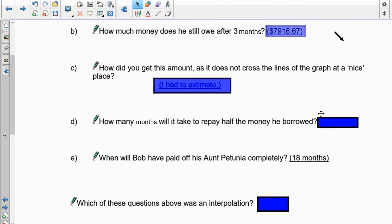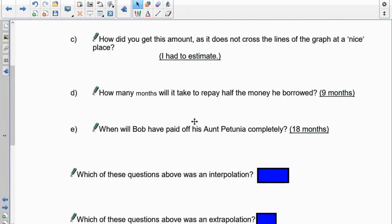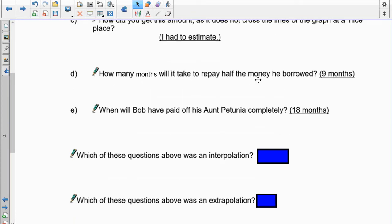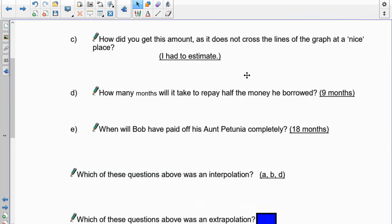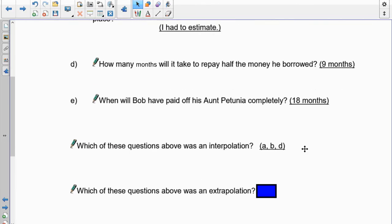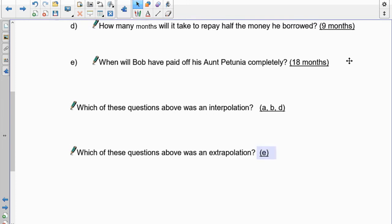Now, taking a look at these questions right here, it says which of these questions is an interpolation? Now, remember interpolation is when you get information off the inside of the graph. Well, he still owes 3 months up here and we are from 0 to 18 months. So, this is an interpolation. And down here, how many months will it take to prepay half? That's still on the graph. That's an interpolation. And when will Bob have paid off his money completely? That's 18 months, but that was beyond where the graph ended. So, this is your extrapolation. So, A, B, and D are all interpolations. And the extrapolation, of course, is question E.